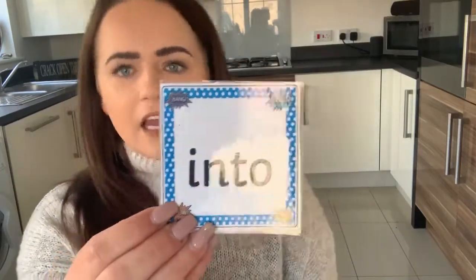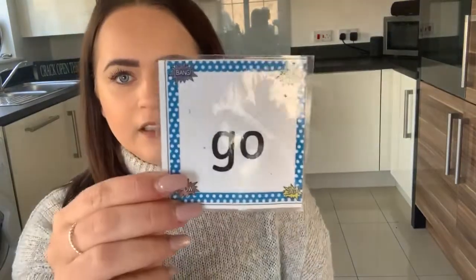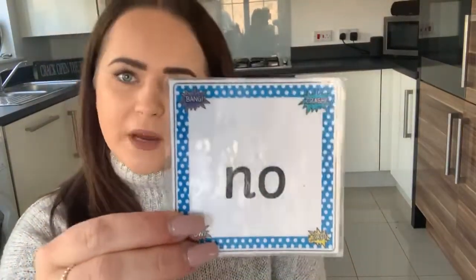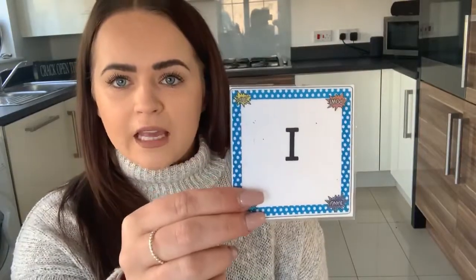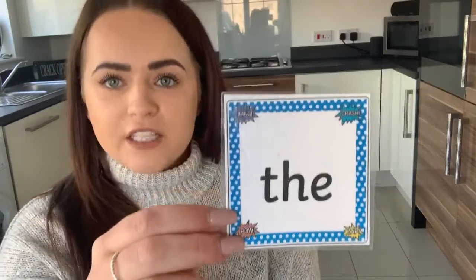Okay, let's quickly look at the Phase 2 tricky words. We know all of these tricky words, so we're going to go through them all together. We'll say the mnemonics first and then you can have a go on your own. Into — I-N-To. G-O, let's go. N-O spells no. T-O-2. I — I draw my body, hat and shoes. T-H-E spells the.